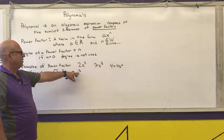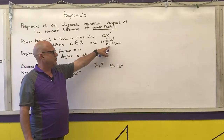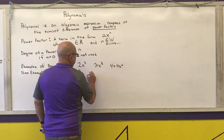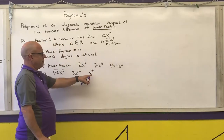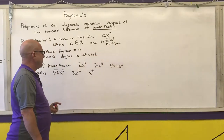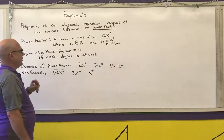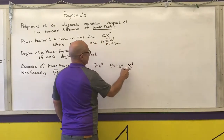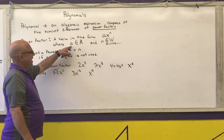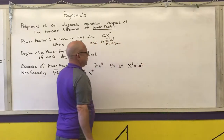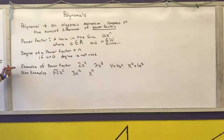3X to the negative 2 is a non-example because the exponent is required to be 0 or positive. X to the pi is also a non-example because the exponent must be 0 or a positive integer. X to the 5th is an example because A is 1, and we can write it as 1·X^5.